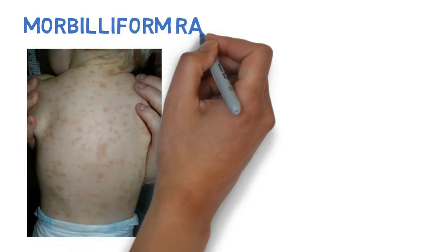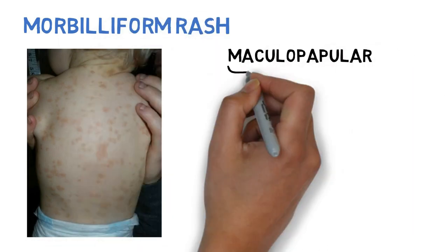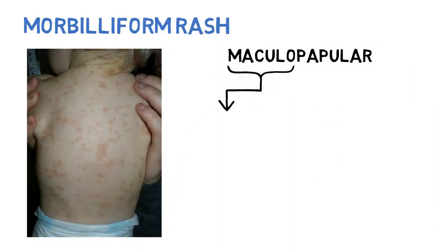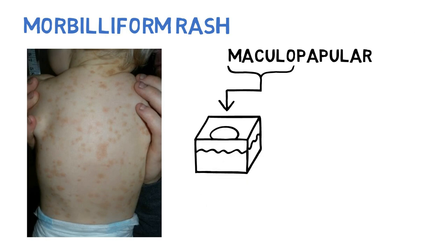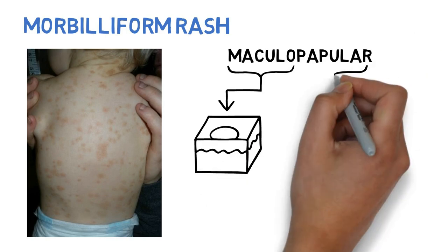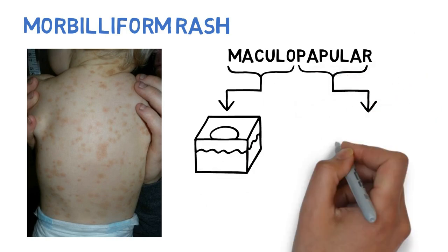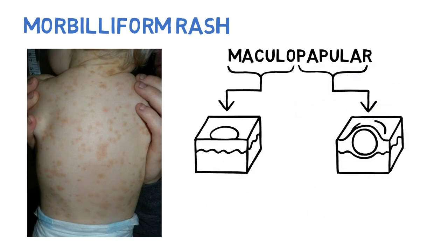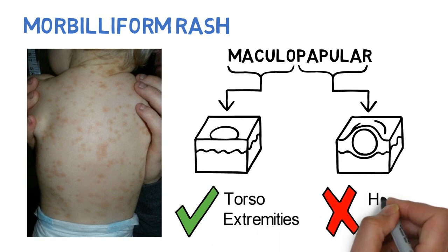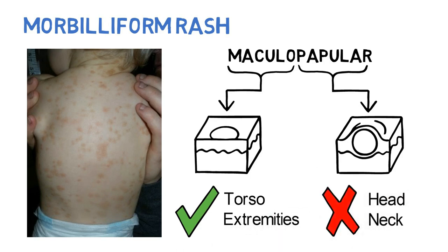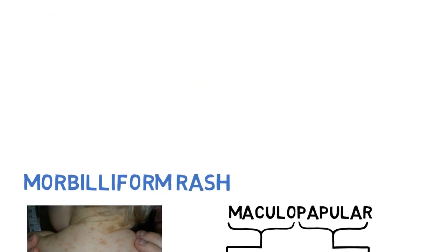A morbilliform rash is maculopapular. This means that there are macules, which are flat discolored spots on the skin, as well as papules, which are raised bumps. Lesions are often on the torso and extremities, but spare the head and neck.